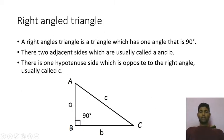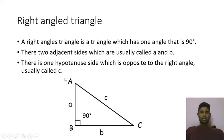So now, what is a right angle triangle? A right angle triangle is any triangle with one of its angles equal to 90 degrees. As you can see in this example, there is a triangle ABC and the angle ABC is 90 degrees. Any angle that is 90 degrees is also called a right angle, which is why it is called a right angle triangle.